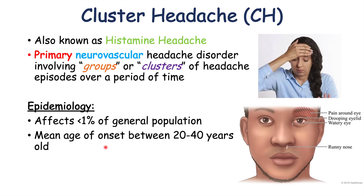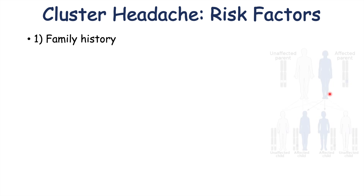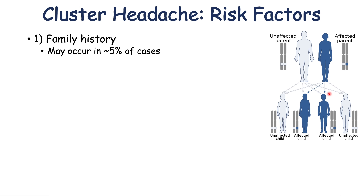The mean age of onset for cluster headaches is between 20 to 40. One risk factor is family history — if you have a parent or sibling with cluster headaches, you're more likely to have it yourself, though it only accounts for 5% or less of cases. So family history doesn't contribute too much, but it is a potential risk factor.